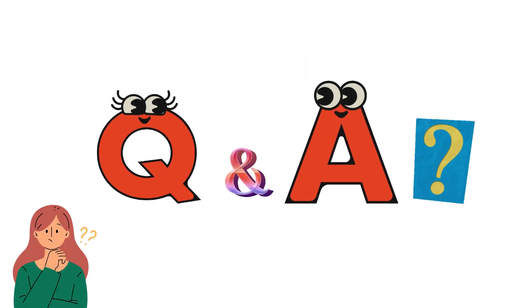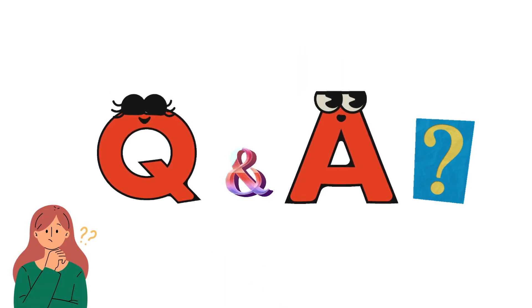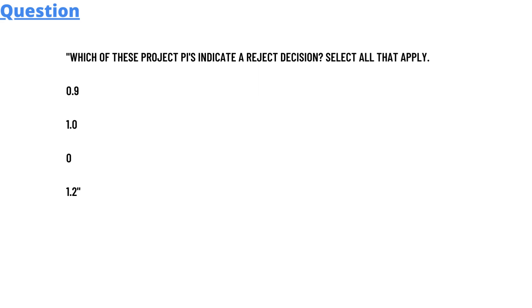Our today's question is: which of these project PI's indicate a reject decision? Select all that apply. The options are: 0.9, 1.0, 0, and 1.2.